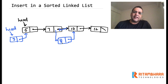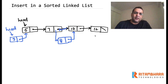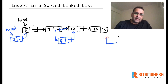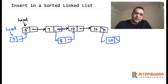The third scenario is when we are inserting a node at the end of the list. So if we are inserting a value like 20 then 20 will be the last node in the list. In which case the next of 20 will be null and next of 12 will hold the address of this new node 20.